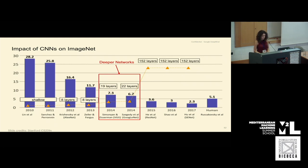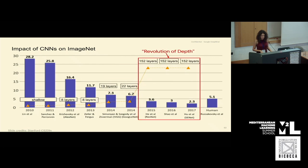When we look at the impact of CNNs on ImageNet: in 2010 and 2011 there are shallow networks, then AlexNet with 8 layers significantly improves performance. Moving to 2014, there's VGG and GoogLeNet, which have even more layers — roughly double. Starting from 2015, the depth of networks increased significantly. And notably, in 2015, for the first time the performance of a neural network surpasses the performance of a human on ImageNet.